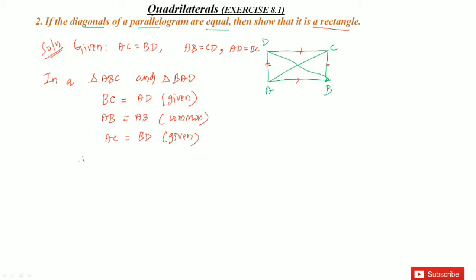Now, therefore, I'm telling by using this, all the three sides equal. So these two triangles: triangle ABC is congruent to triangle BAD. So this is by SSS criterion. I'm telling this is SSS criterion. This is congruent.